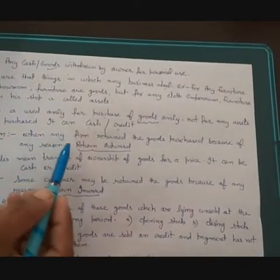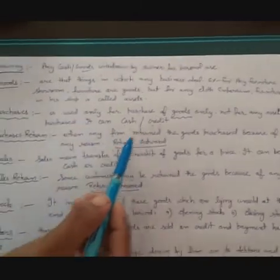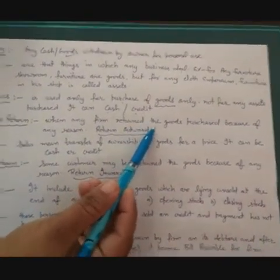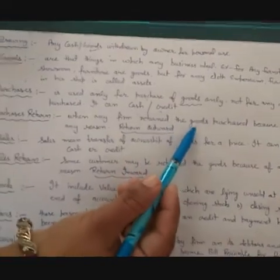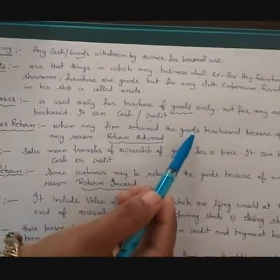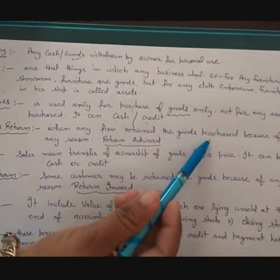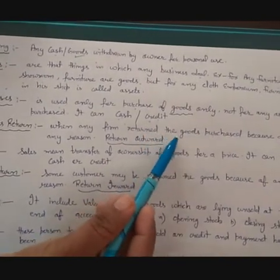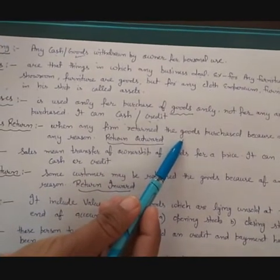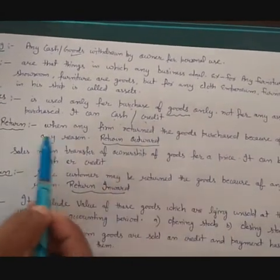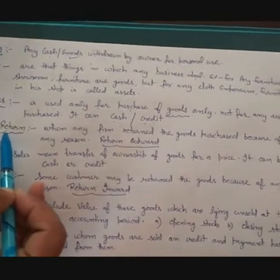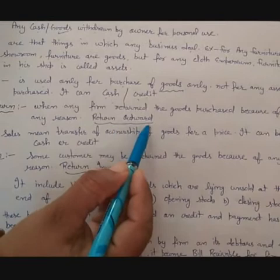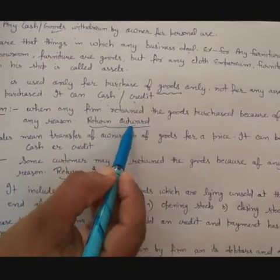The next term is Purchase Return. What happens is that for any reason — if the goods received are not according to the sample, or are defective, or the billing was not as decided — the firm can return the goods to the supplier. That is known as Purchase Return, also called Return Outward.